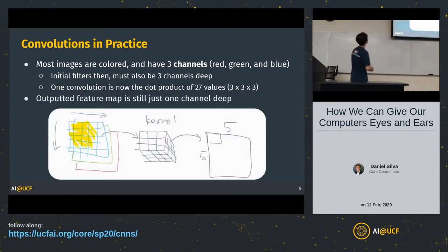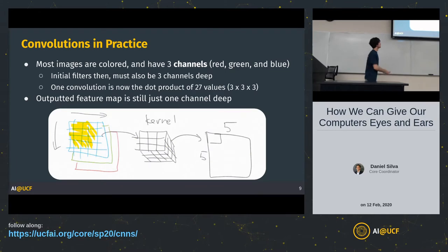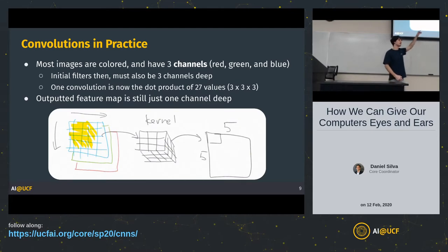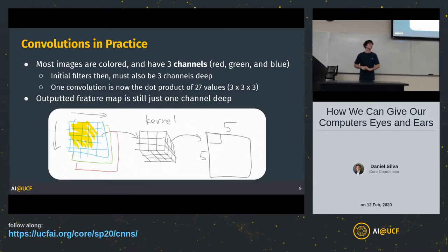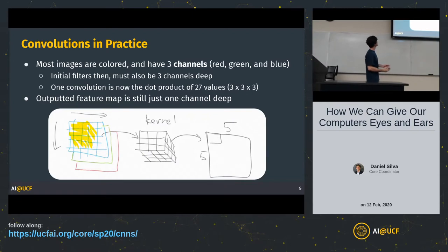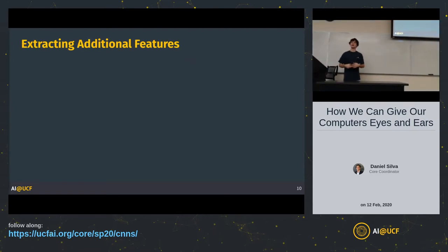Visualizing it: the image is the red, green, and blue channels. The 3D kernel sits on top and multiplies 27 different values — 9 in the blue channel, 9 in the green, and 9 in the red — still summed into a single activation. The outputted feature map, even with 3D kernels, is still one channel deep. This single filter is still extracting a single feature and creates a single-channel feature map.